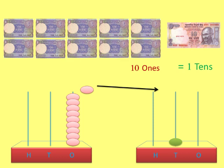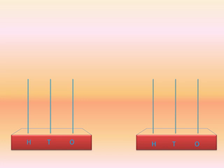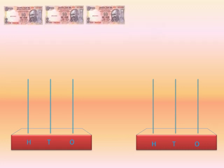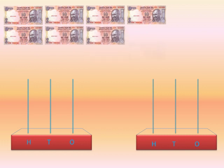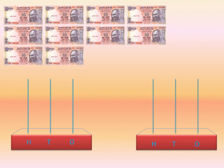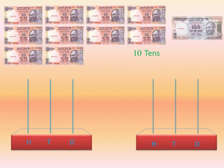Now, take 10-rupee notes. It is 1, 2, 3, 4, 5, 6, 7, 8, 9 and 10. So, 10 tens are equal to a 100-rupee note — that is 100.